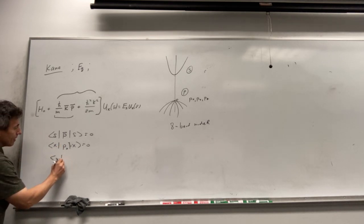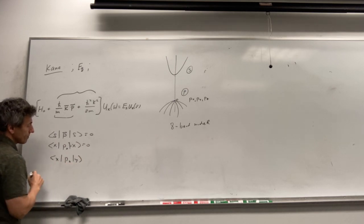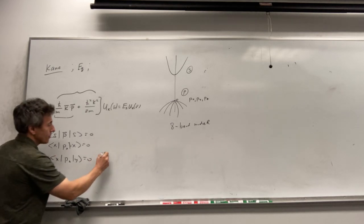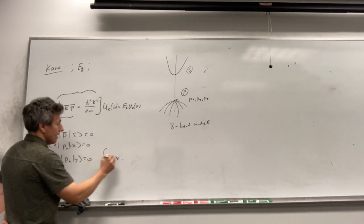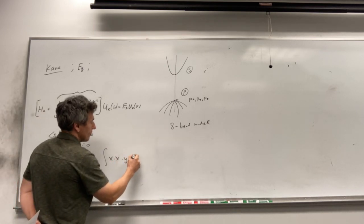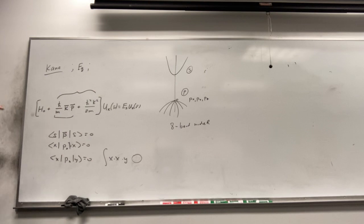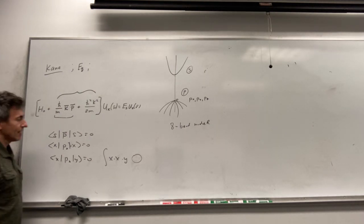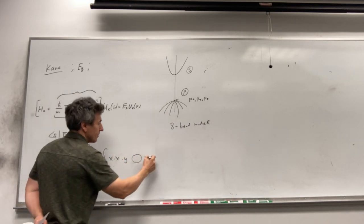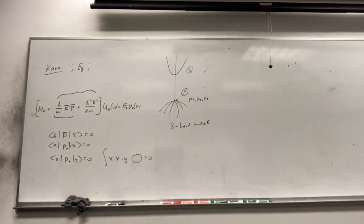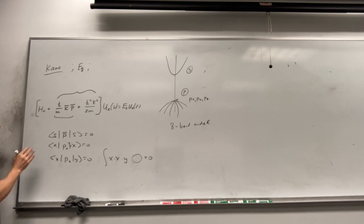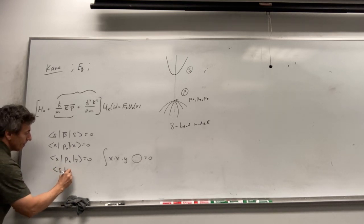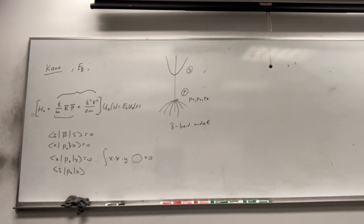Similarly, the matrix element between X and Y states — effectively the integral over Y times X times the isotropic function — is zero because integrating the odd function Y over positive and negative gives zero. The same applies to all cross terms between X and Z, and Y and Z. The only non-zero matrix element is between the S orbital, Px operator, and the X orbital, because now the symmetry is correct.